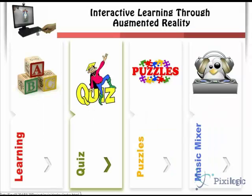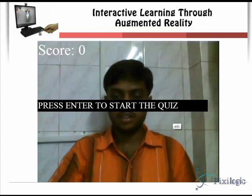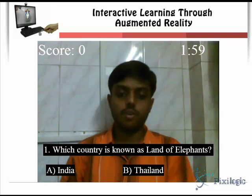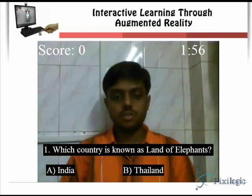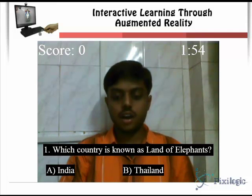The next module is the whiz module. Here we have a question with two options. The score is incremented by one if the answer is correct. We have three markers: one for option A, one for option B, and one for the next question. For question 1, the answer is option B.